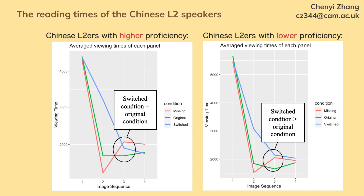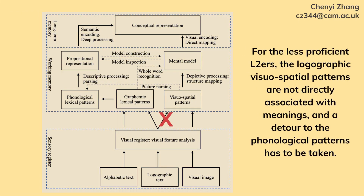Indeed, the results demonstrated that for the highly proficient L2 Chinese speakers, no distortion was caused by the textual bridging information in the pictorial story. But for the L2 Chinese speakers with a lower proficiency, the texts are significantly more difficult to process than viewing the pictures. This comparison suggests that for the less proficient L2 speakers, the logographic facial-spatial patterns are not directly associated with the meanings, and therefore the direct mapping is blocked, and for them a detour to the phonology patterns has to be taken.